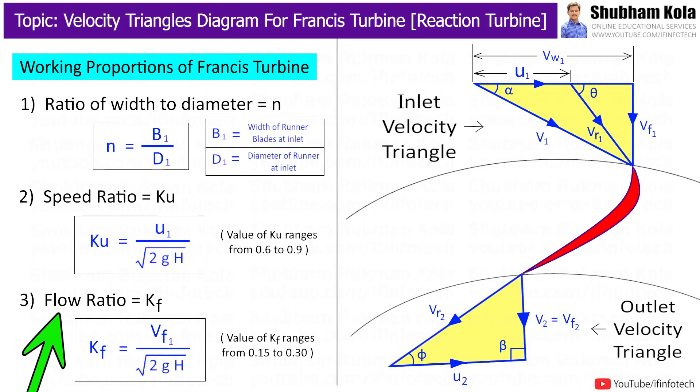Next is flow ratio. It is the ratio of velocity of flow at inlet to the theoretical jet velocity called as spouting velocity. And the value of flow ratio ranges from 0.15 to 0.30.